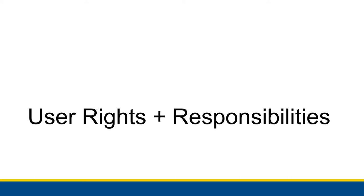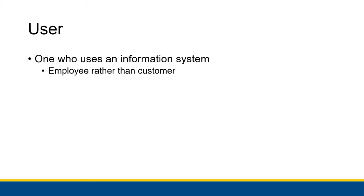In this video we are going to talk about user rights and responsibilities — the rights and responsibilities that any user has when they're actually interacting with an information system and an organization. We're going to talk about a user as one who uses an information system rather than one who is actively developing it. One could be a developer and a user at the same time, but we're talking about the role of a person who is actively using that information system.